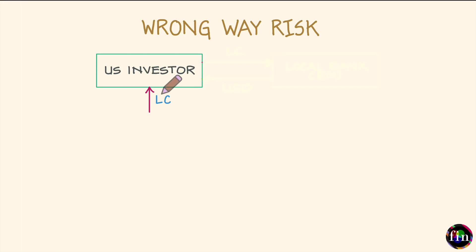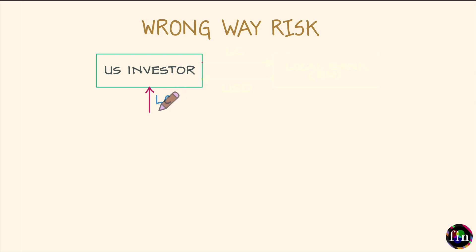In this video, let's talk about wrong way risk. Let's begin with a simple motivating example. There is a US-based investor who has bought emerging market sovereign bonds. These are bonds whose payouts will be denominated in the local currency of this emerging market — let this local currency be denoted by LC. Our US investor is not very comfortable with the foreign exchange risk exposure that investing in these bonds brings forth.